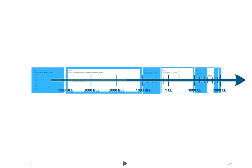Today's video is on eras. An era is a large period of time. We've broken down how we're going to study world history into nine different eras to focus on what was happening during each of those eras. I've constructed a basic timeline here that will show you where the eras happen. I made this one in Prezi.